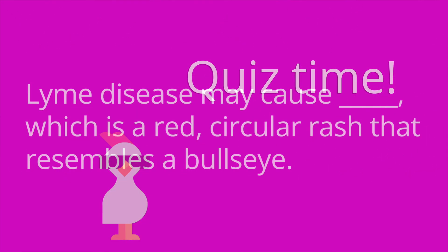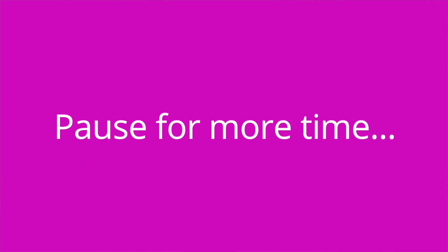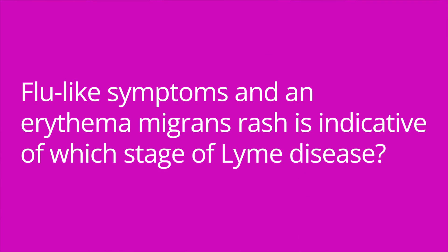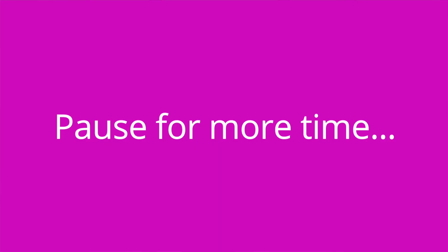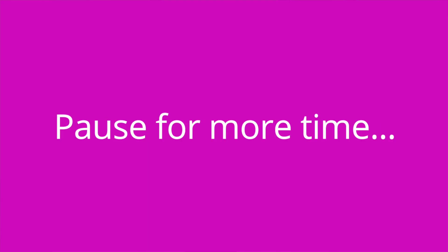It's quiz time and I've got three questions for you. Question number one: Lyme disease may cause blank, which is a red circular rash that resembles a bullseye? The answer is erythema migrans. Question number two: Flu-like symptoms and an erythema migrans rash is indicative of which stage of Lyme disease? The answer is stage one, which is the early localized disease stage. Question number three: How is Lyme disease treated? The answer is with antibiotics, such as doxycycline.